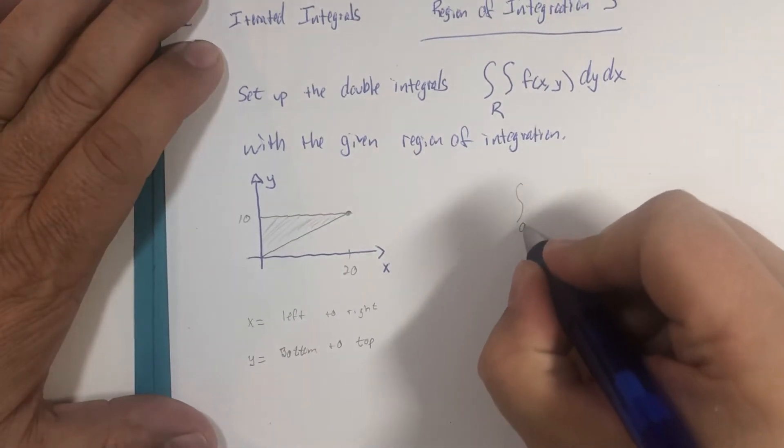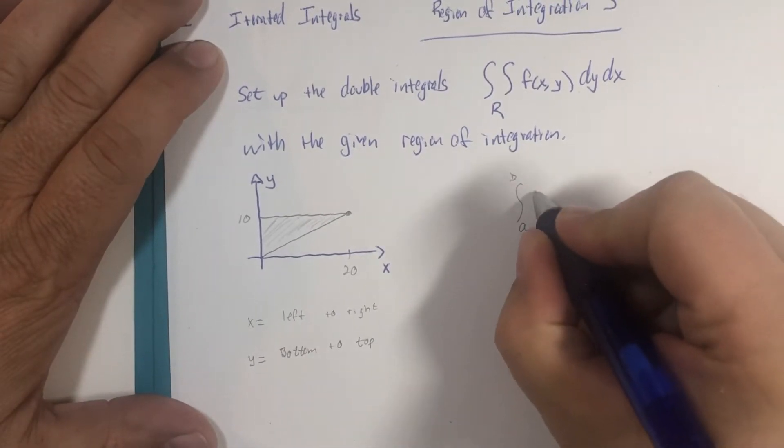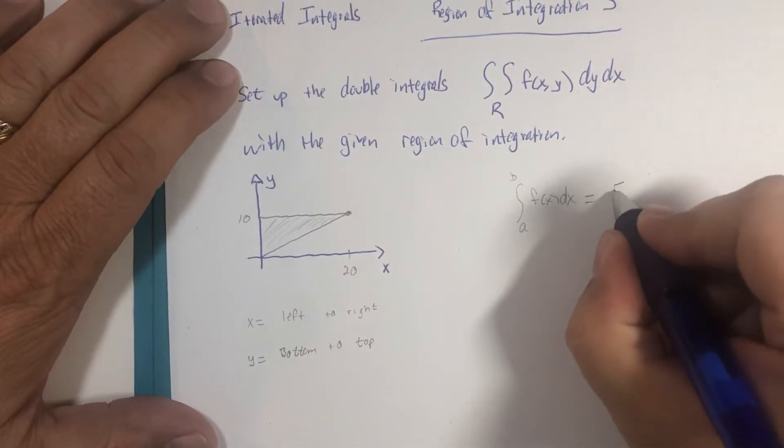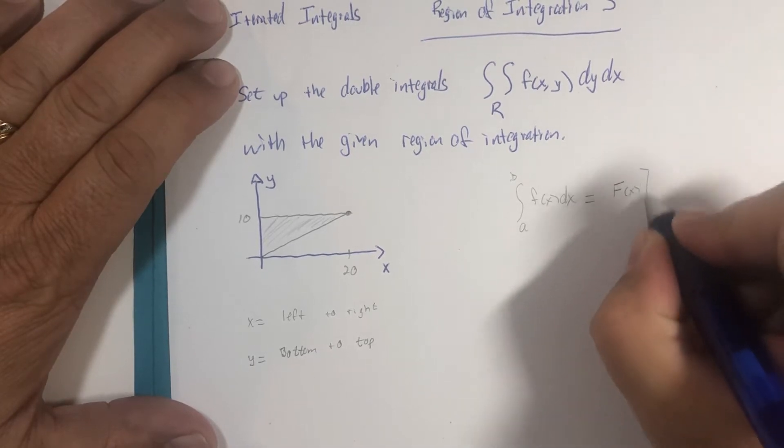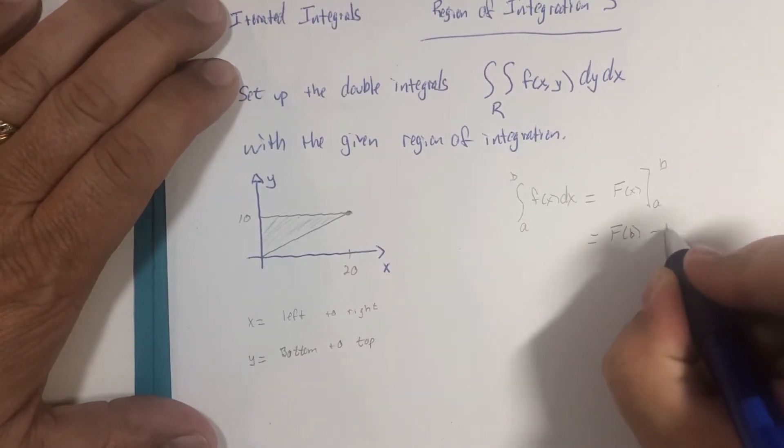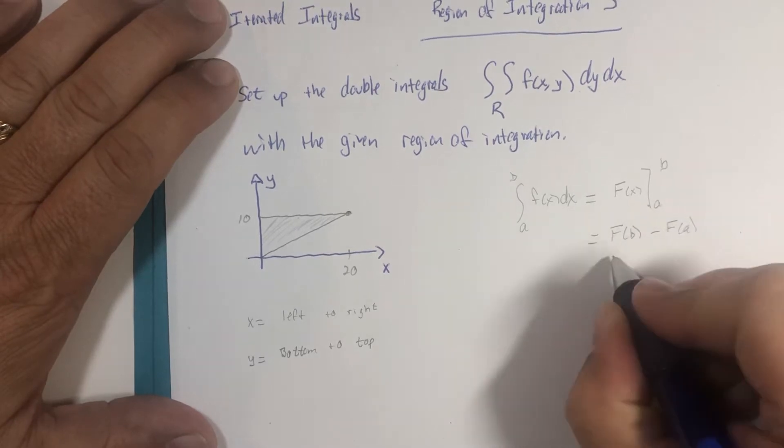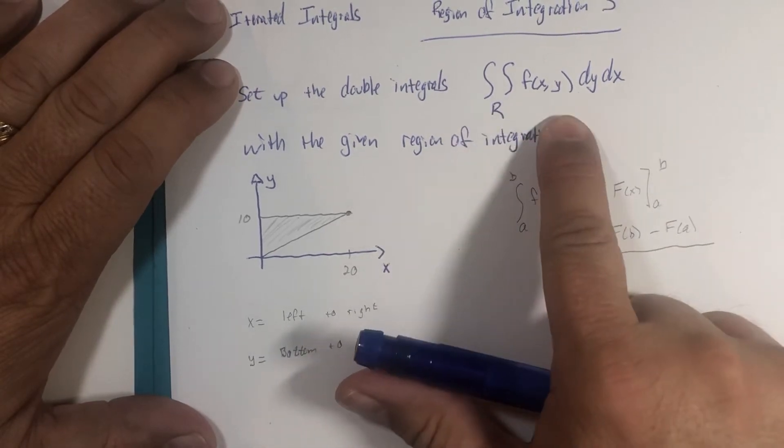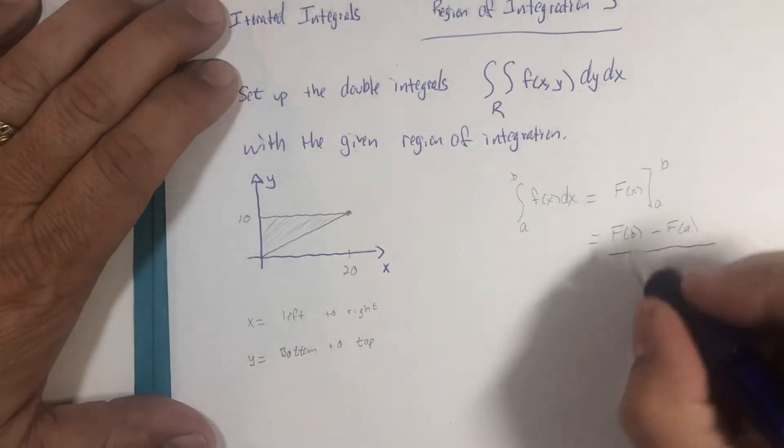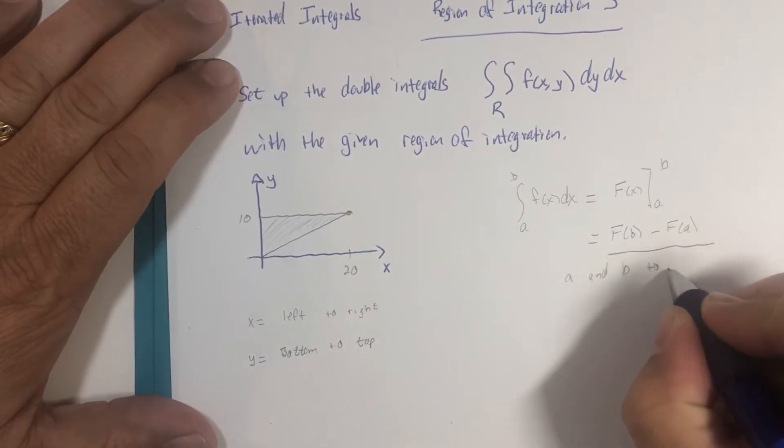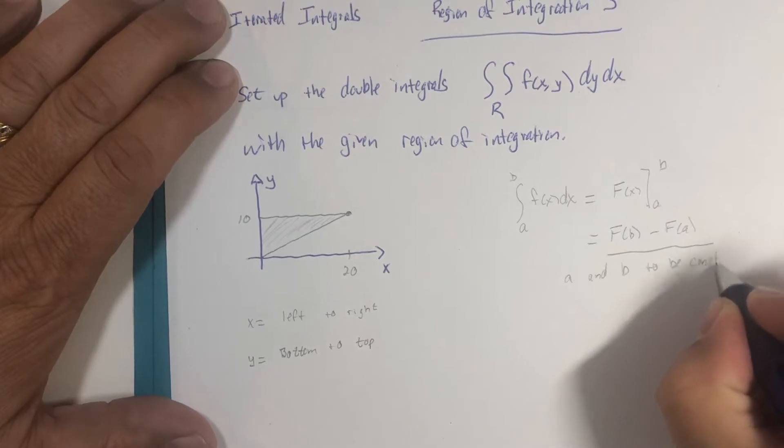If you recall, when we integrate a function in calc 1 style, the fundamental theorem says once you find some antiderivative and you do the substitution, we are looking for this to be a numerical value when we're done integrating the double integral. So that means we need a and b to be constant. No variables there.